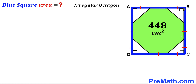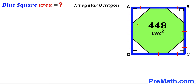All four sides of the blue square are divided into three equal segments in the same way. Please bear in mind that this green shaded polygon is also called the irregular octagon. Our task is to calculate the area of this blue square ABCD.